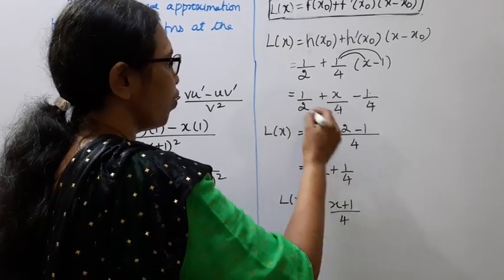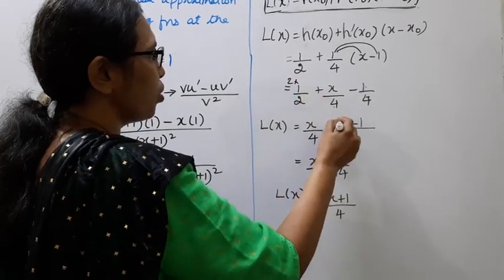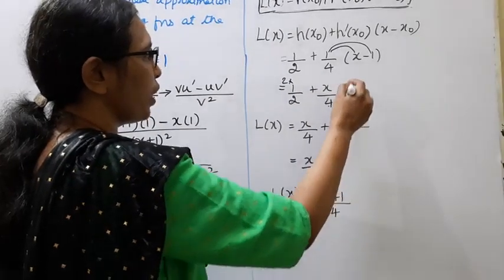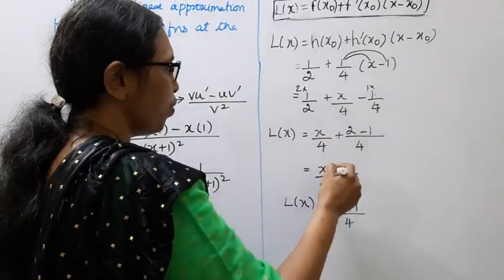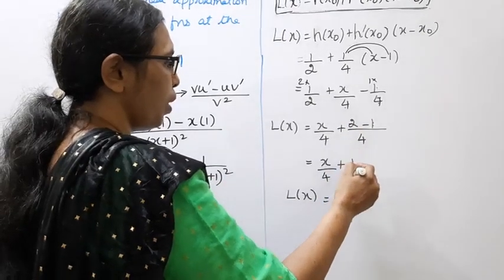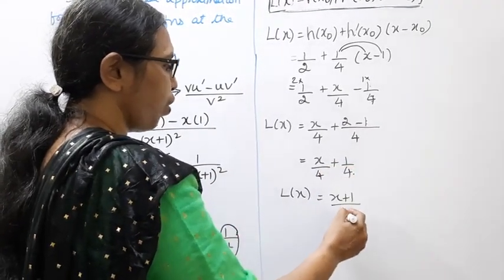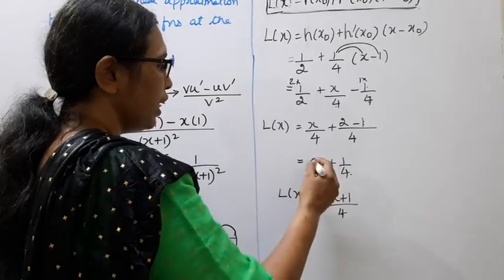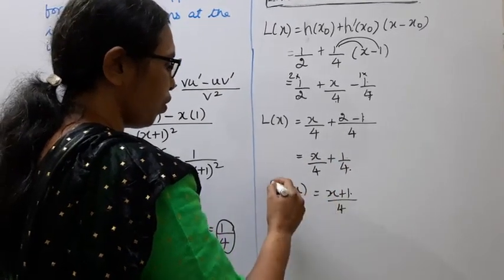Simplifying: 1/2 + x/4 minus 1/4. Finding common denominator 4: 1/2 becomes 2/4. So 2/4 minus 1/4 = 1/4. Therefore L(x) = x/4 + 1/4. The numerator is x+1, so L(x) = (x+1)/4.